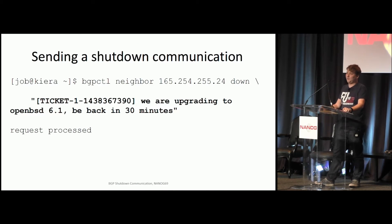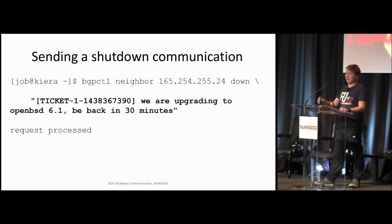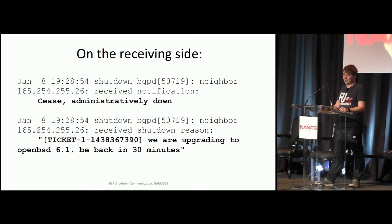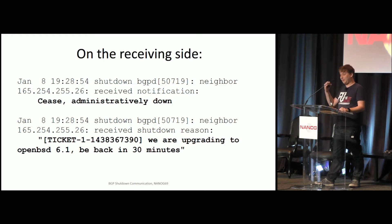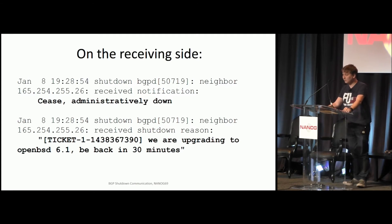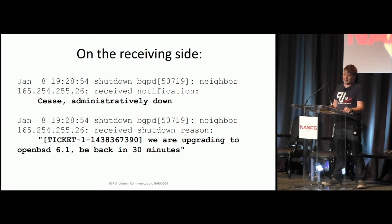What this looks like on OpenBSD, which already supports this: you can type on the command line that a neighbor needs to be disabled and append a short message — for instance, the ticket ID, that you're upgrading, and that you'll be back in 30 minutes. On the receiving side, you get the syslog message saying the session is now down, and next to that is the shutdown communication message you sent to that specific peer. I think this will greatly enhance operations in the peering world.